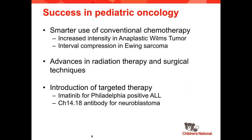Other reasons for success in pediatric oncology include smarter use of conventional chemotherapy — for instance, increased intensity for anaplastic Wilms tumor, and interval compression of chemotherapy in Ewing sarcoma, which demonstrated survival improvement. We've also had advances in radiation therapy and surgical techniques important for local control, and more recently, introduction of targeted therapy such as imatinib for Philadelphia-positive ALL and chimeric antibody for high-risk neuroblastoma, though not all targeted therapies have been successful.